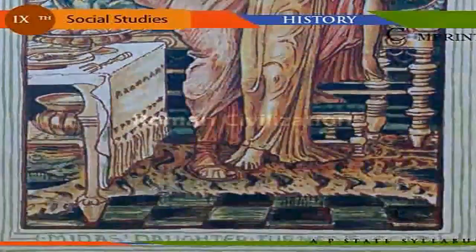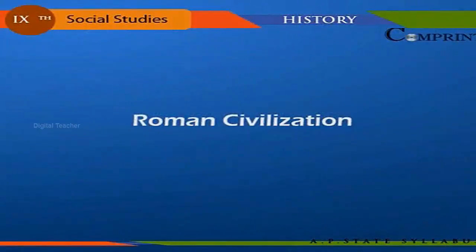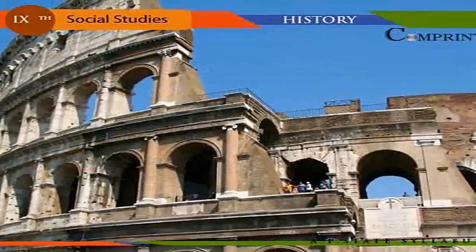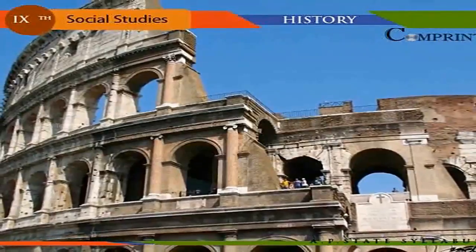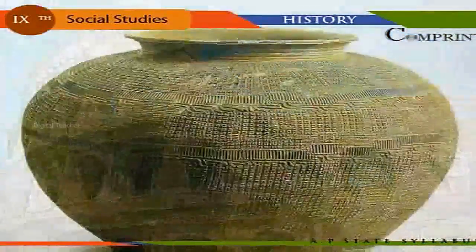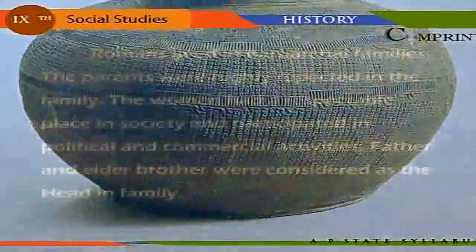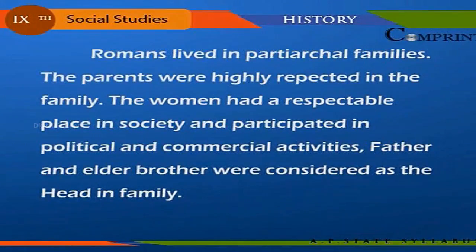Roman Civilization: Italy is a peninsula in the Mediterranean Sea. The Tiber is an important river of this country, and the city of Rome, built on its bank, became the center of Roman civilization and a meeting point between Eastern and Western civilizations. The ancient Romans were hard-working people whose main occupations were agriculture and cattle and sheep breeding. Pottery was made of clay and wood.